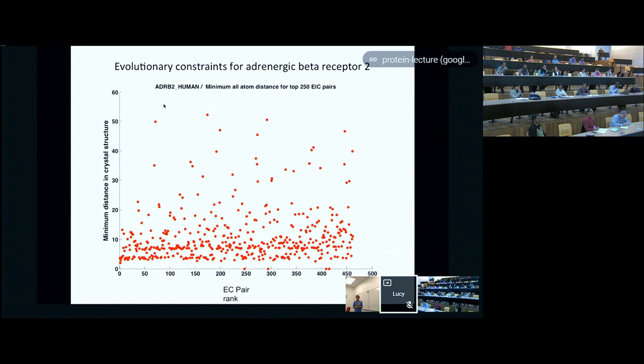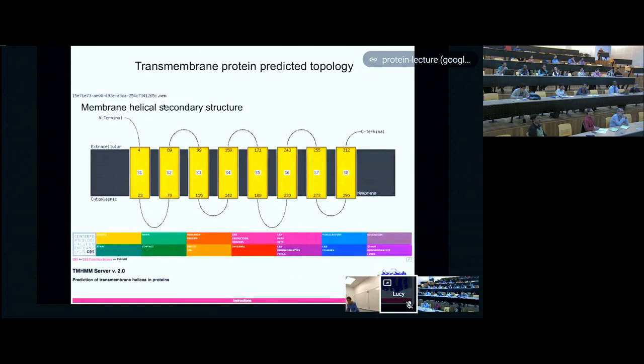Recent work published from the Baker lab suggests that, at least in cases where you have a large amount of sequence data and where you try very hard to fit these models accurately, they don't find evidence for residue pairs that covary very strongly but are far apart in structure. But there's a lot of debate about that particular question. For predicting structure, what we want to do is keep the high-scoring covariance pairs that are close in structure. For transmembrane proteins, you can do a very nice job of predicting the topology—the membrane helical secondary structure.